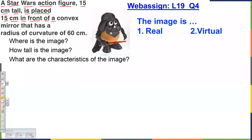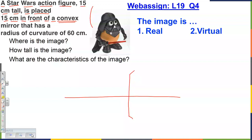In addition to reflection, there is another phenomenon: refraction. When light approaches a boundary between two media, if the medium is transparent, some light is reflected and some is transmitted — and when transmitted, the light bends. This bending is visible in a simple water tank demonstration and also with tonic water under UV light, where the quinine makes the beam visible.